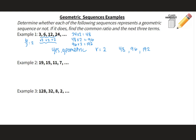Looking at example 2: 19, 15, 11, 7. Just by looking at this I can tell it is not geometric because the pattern seems to be subtracting 4. In the first example the numbers increased pretty fast; here they're decreasing at a constant rate. So this is not geometric — this sequence is actually arithmetic with a common difference of negative 4.